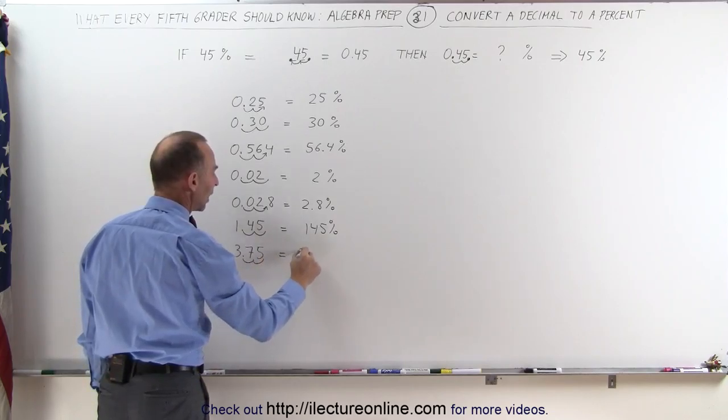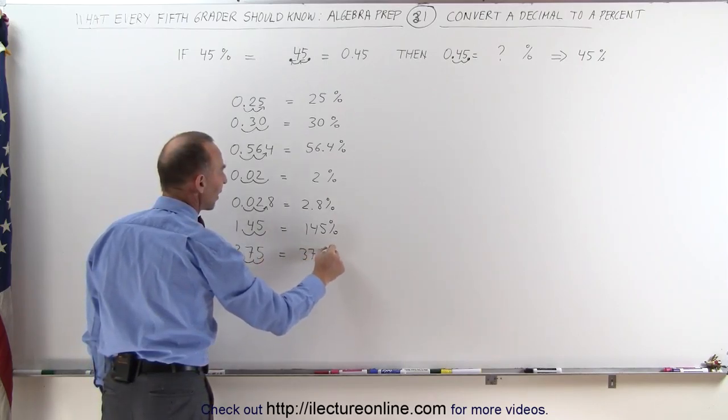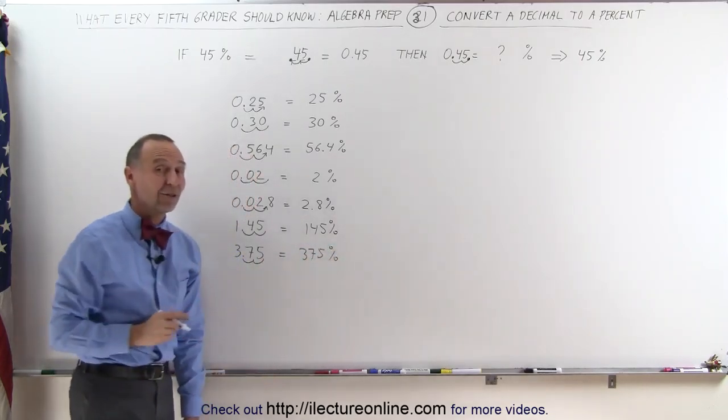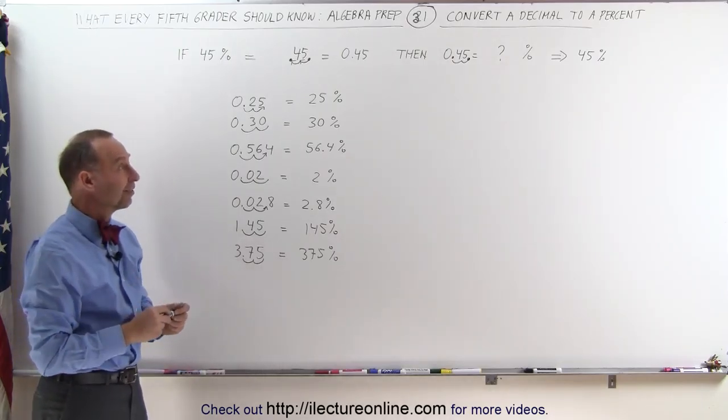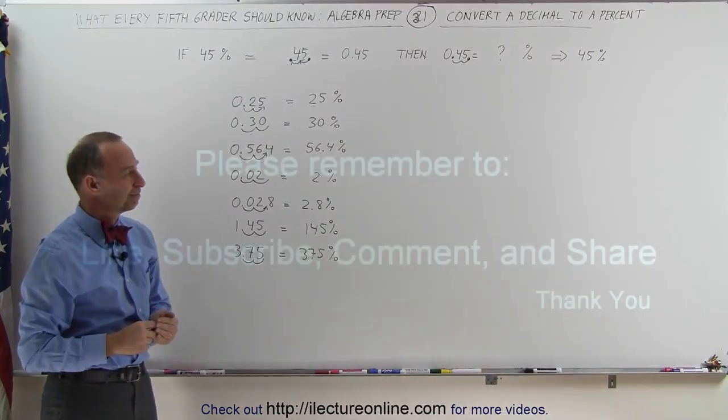And finally, here, we move it over twice, and we get 375%. Now that you see how we do that, you must admit, that's pretty easy, and that's how it's done. Thank you.